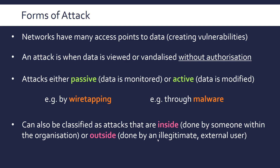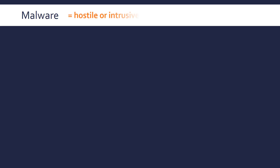Attacks can also be classified as inside — done by someone who works for the organization, someone who has access from the inside — or outside, done by someone external. Apparently 60% of security breaches come from the inside, which is maybe more than you'd imagine. Malware is an umbrella term for any hostile or intrusive software — malicious software in other words — and it's used in active attacks.